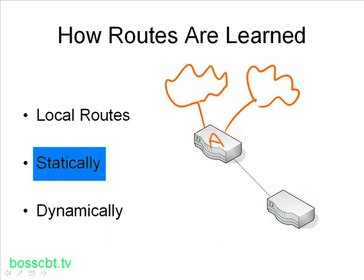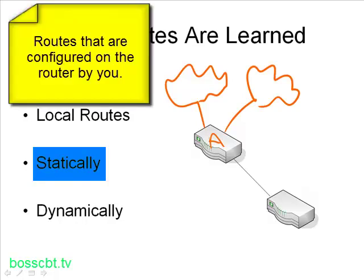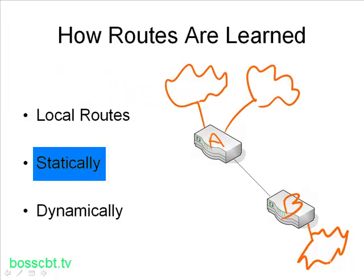The second approach is a static approach. A network administrator can log into router A and manually configure a route that it might otherwise not know about. To illustrate that, let's say this is router B on the bottom, and it has a particular subnet here. But router A has no way to know about it. So you could log into router A, go to the command line, and enter a configuration that says if you need to get to this network, go here — send a packet out this interface. These are referred to as static routes, and that static route is put into the route table on router A.